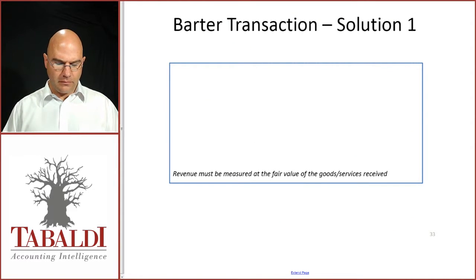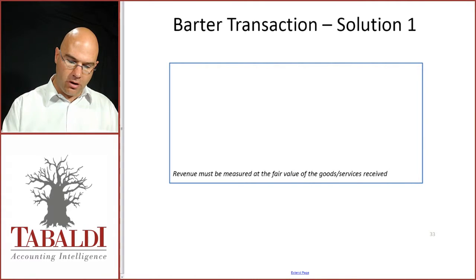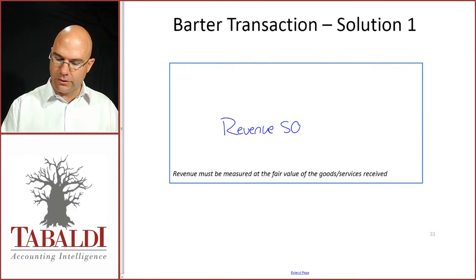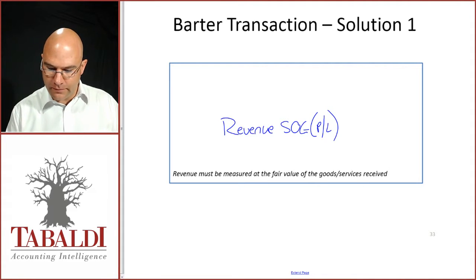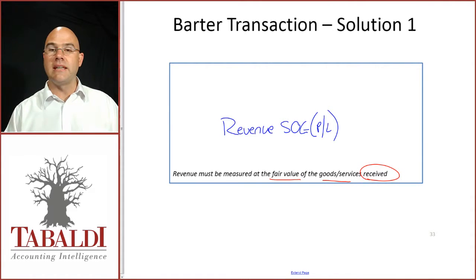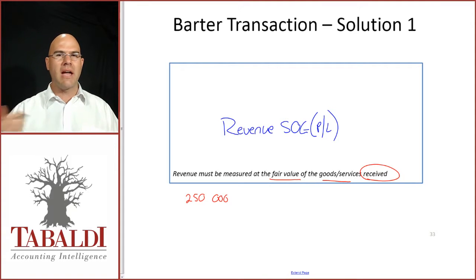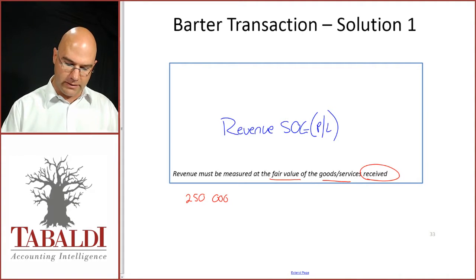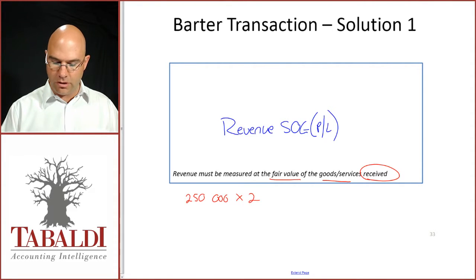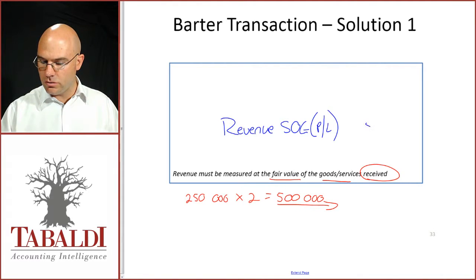Solution 1. We need to record the revenue, so we have to go credit revenue from sale of goods in profit or loss. How much are we going to recognize? Fair value of the goods or services received, i.e. the motor vehicles. We received motor vehicles with a fair value of $250,000 currency units each — it could be rands, dollars, whatever our functional currency is. We're getting two motor vehicles, so revenue will be $500,000. Credit P&L, $500,000.